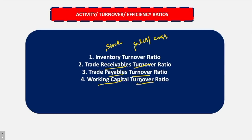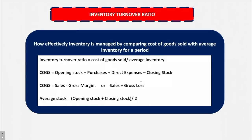We will briefly study all four ratios one by one and then take a lot of good quality, advanced level as well as basic and conceptual questions to create clarity on how to calculate these four ratios and what kind of questions can be asked in the examination. First, let's talk about inventory turnover ratio or stock turnover ratio. The formula is cost of goods sold (COGS) upon average inventory. When talking about inventory or stock, we do not take sales at first hand — we take cost of goods sold because inventory is valued at cost.